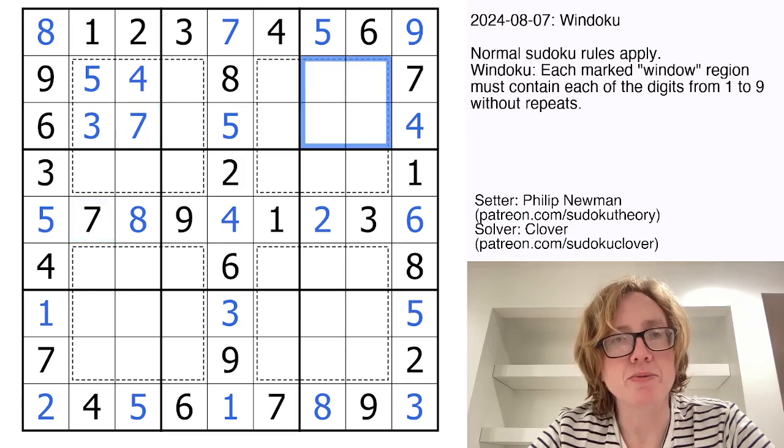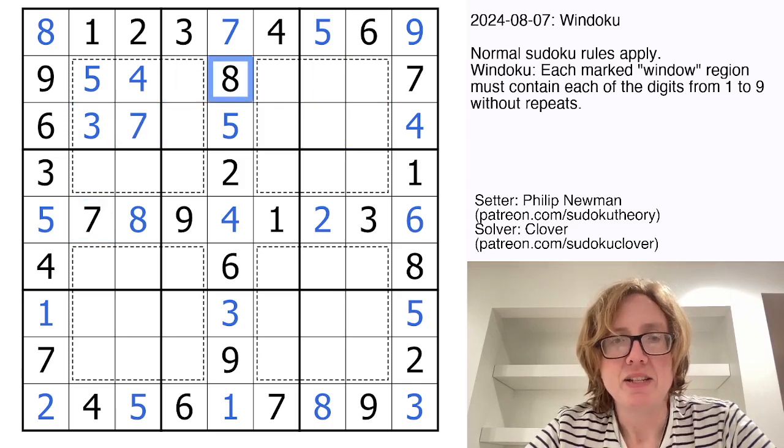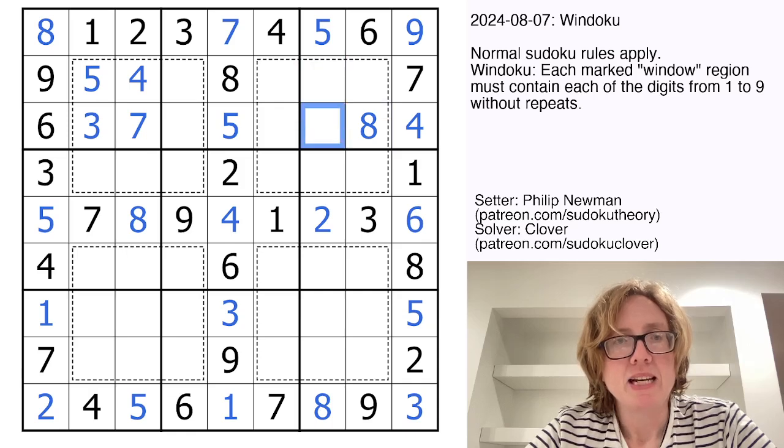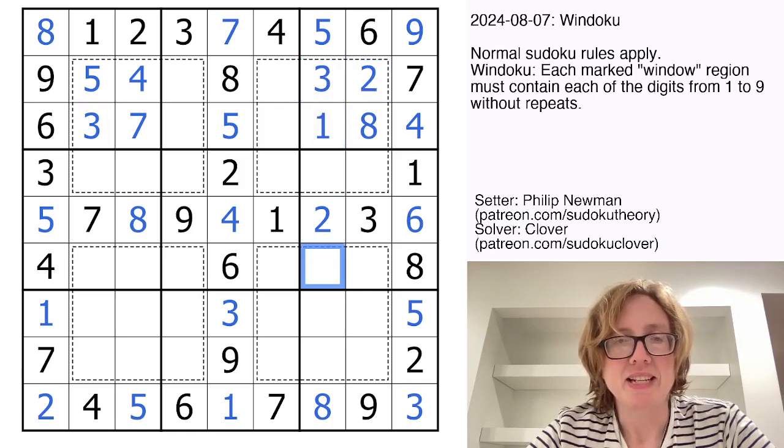Up here, I need one, two, three, and eight. I see two eights, so eight must go there. And those will be one, two, and three. My two eliminates two from those cells. My three eliminates three from that cell, and that is a one and a three.